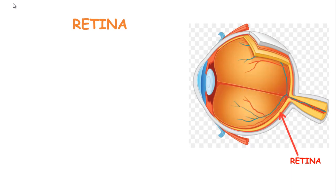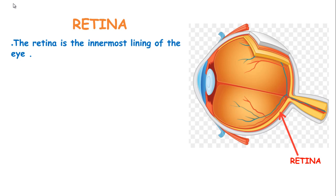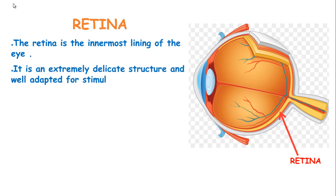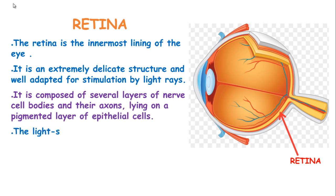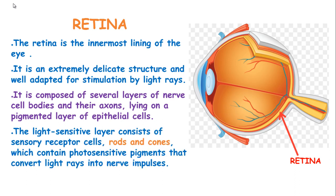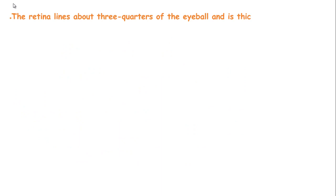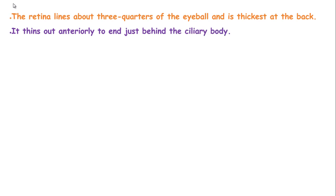The retina is the innermost lining of the eye and is an extremely delicate structure well adapted for stimulation by light rays. It is composed of several layers of nerve cell bodies and their adjuncts, lying on the pigmented layer of epithelial cells. The light-sensitive layer consists of sensory receptor cells known as the rods and cones, which contain photosensitive pigments that convert light rays into nerve impulses. The retina lines about three-quarters of the eyeball and is thickest at the back of the eye, thinning out anteriorly to end just behind the ciliary body.